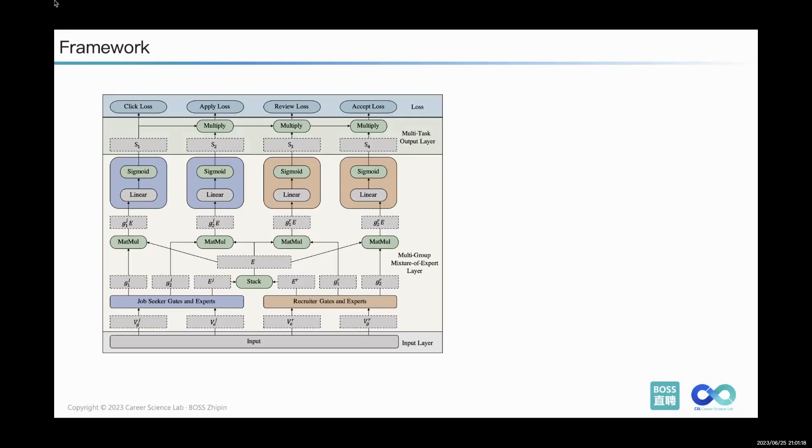Now, let's go deeper into the proposed BOSS framework. The first mechanism embedded in BOSS is the multi-group mixture of experts. This allows our system to harness the power of experts for modeling different preferences from two parties, promising a bespoke approach to each situation.